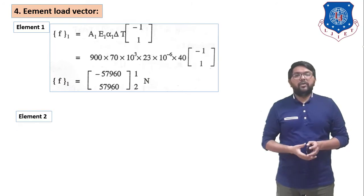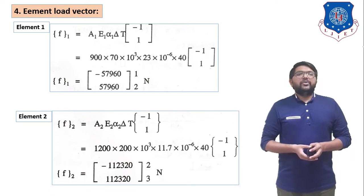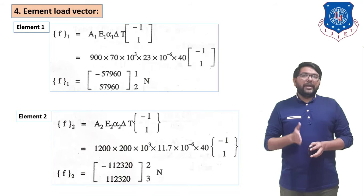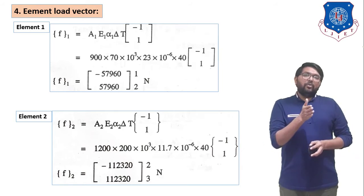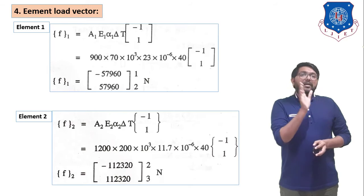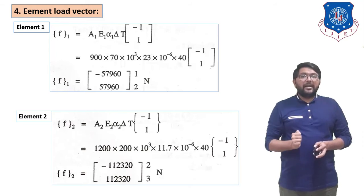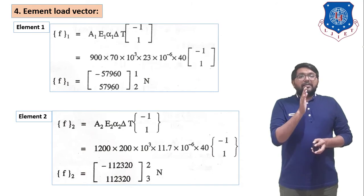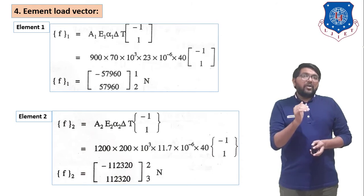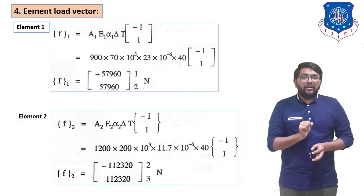For element 2, same equation: F₂ = A₂E₂α₂ΔT × [−1; 1]. Substituting the values, we get F₂ = [−11232; 11232] N, with node indices 2 and 3. Element 2 is mounted between nodes 2 and 3.